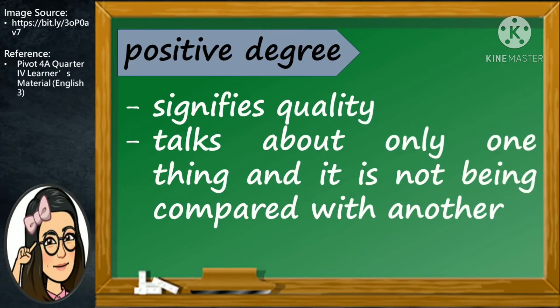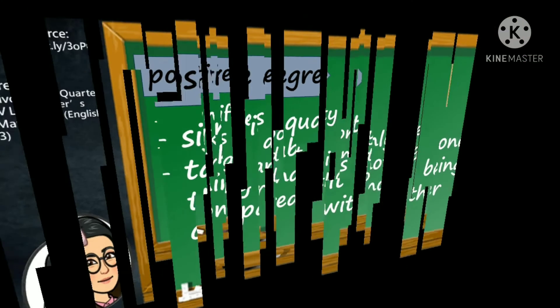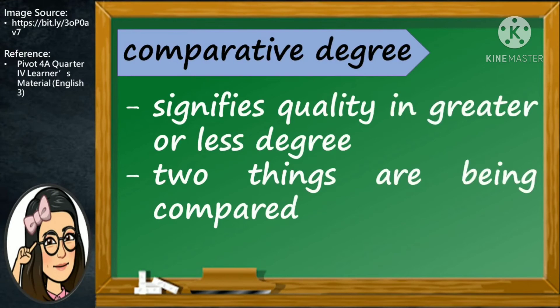The positive degree signifies quality. It talks about only one thing and it is not being compared with another. The comparative degree signifies quality in greater or less degree. Two things are being compared.